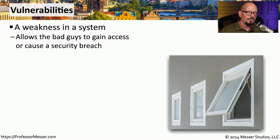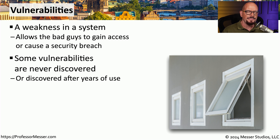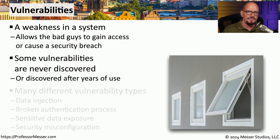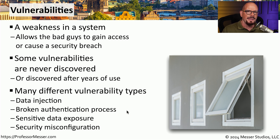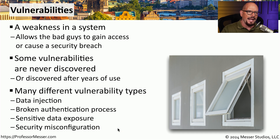These vulnerabilities list a set of weaknesses associated with the current version of the operating system, and if someone takes advantage of those vulnerabilities, they could potentially gain access to our systems or data. Just because a vulnerability hasn't been discovered doesn't mean it doesn't exist — researchers are identifying vulnerabilities all the time that may have existed in an operating system for months or even years. There are many different types of vulnerabilities, such as data injection, flaws in authentication, exposed data, or security misconfiguration.